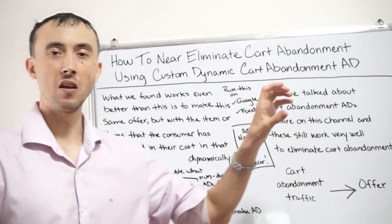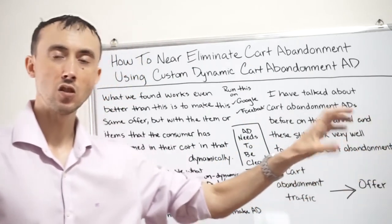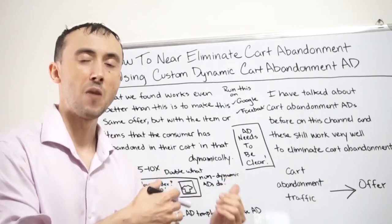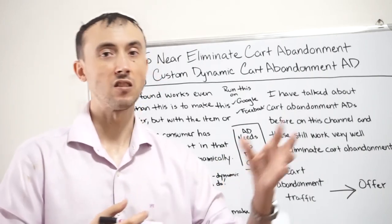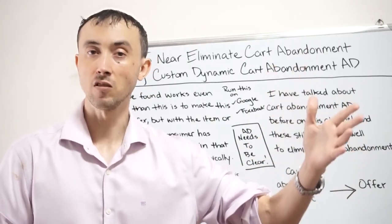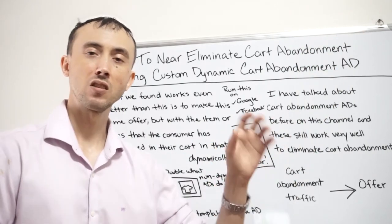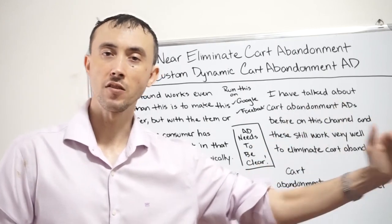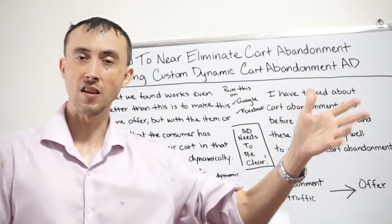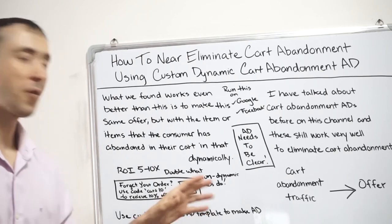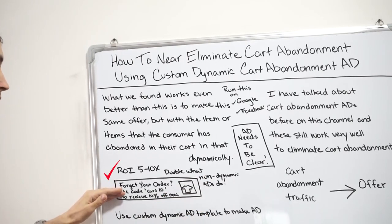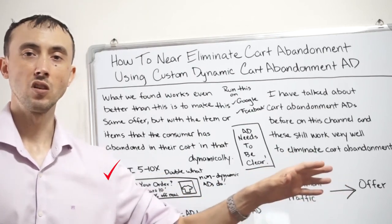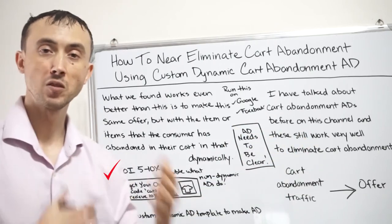Sometimes it actually works better to send them back to the product page — this is better if you have fewer products on your site, because if they're browsing multiple products you won't know with certainty which product page to send them to. You can create a separate cart abandonment audience for each item you're selling, then send them back to the relevant product page. The more expensive the product, the more likely sending them back to the product page works better, because they can resell themselves on all the reasons to buy before going to the cart.